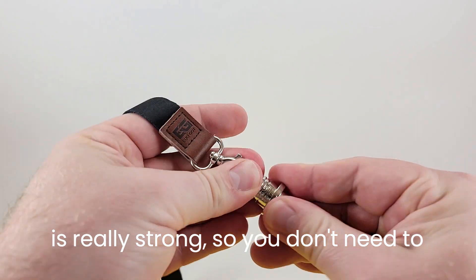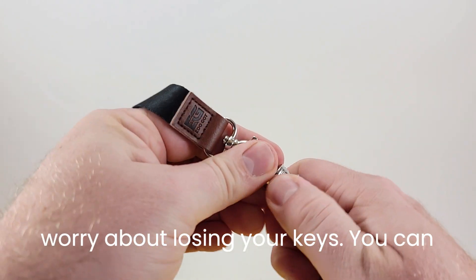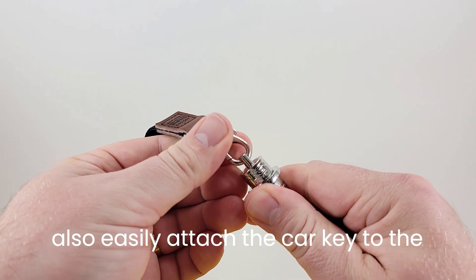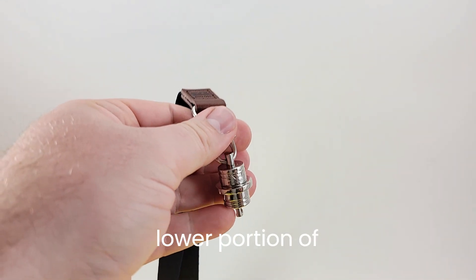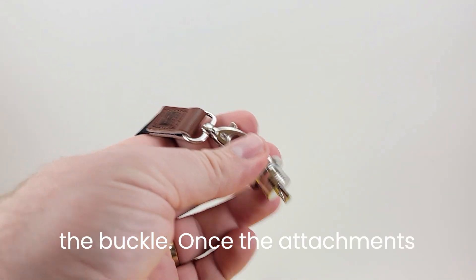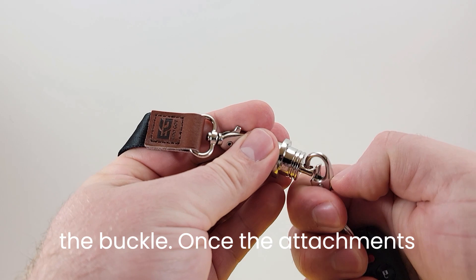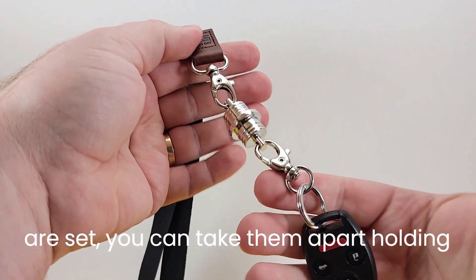The magnet is really strong, so you don't need to worry about losing your keys. You can easily attach the car key to the lower portion of the buckle. Once the attachments are set, you can take them apart.